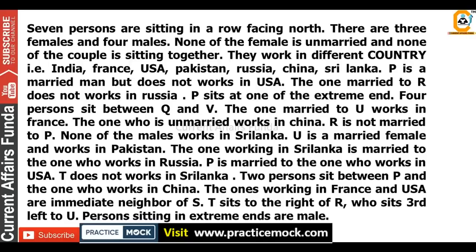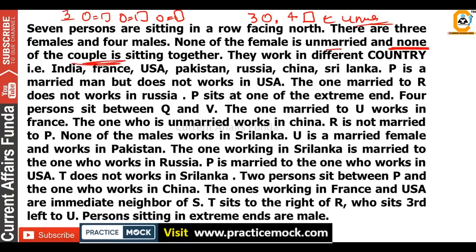None of the females is unmarried and none of the couple is sitting together. So here 3 are female and 4 are male. Since no female is unmarried, there will be total 3 couples and one male who will be unmarried. No couple will sit together. They work in different countries: India, France, USA, Pakistan, Russia, China and Sri Lanka.